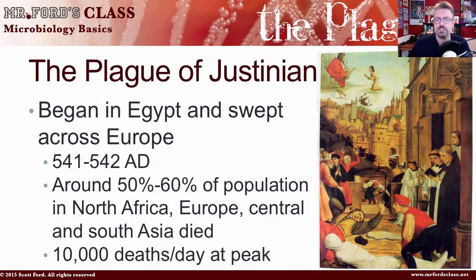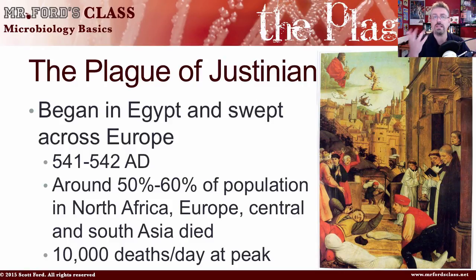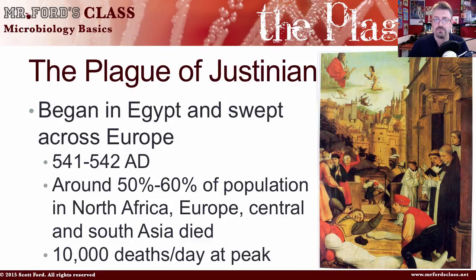The Plague of Justinian began in Egypt and swept across Europe between 541 to 542 A.D. Around 50 to 60% of the population in North Africa, Europe, Central and South Asia died. Imagine living through this — it was an apocalyptic event. At its peak, it caused 10,000 deaths a day. Your ancestors were hardy enough to survive, and that's why you're here today.